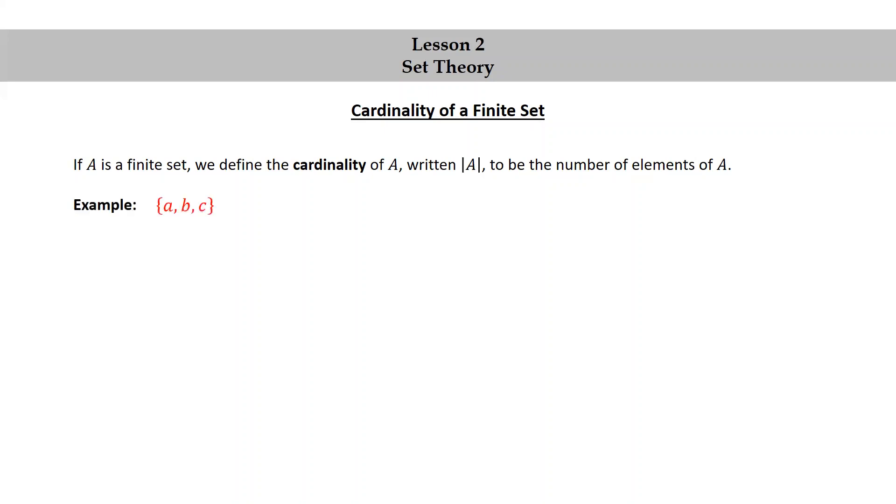Let's look at an example. Consider the set consisting of the elements a, b, and c. The cardinality of this set is three, because there are three elements in the set.